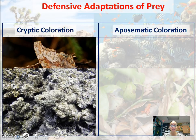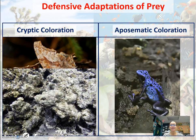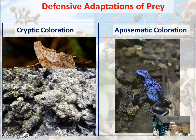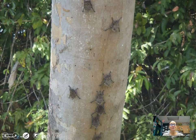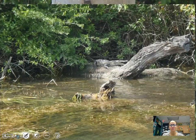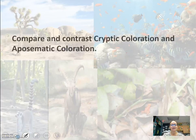Here you see a rockfish in the ocean using cryptic coloration. Then you have aposematic coloration — animals have evolved to be brightly colored, saying 'I'm poisonous, and if you eat me, you'll have troubles.' Brightly colored warnings defend against predators by warning them. In Belize, there are bats camouflaged into the bark of a tree, and a crocodile camouflaged on a log. Compare and contrast cryptic coloration and aposematic coloration — that's box six.